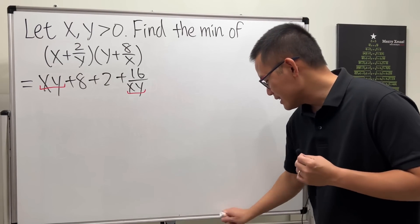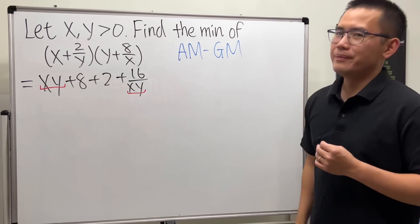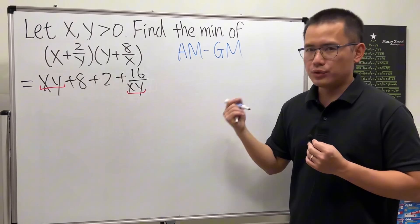In this case, we can try to use the following inequality, and that's the famous AM-GM inequality. The AM stands for the arithmetic mean of two numbers.